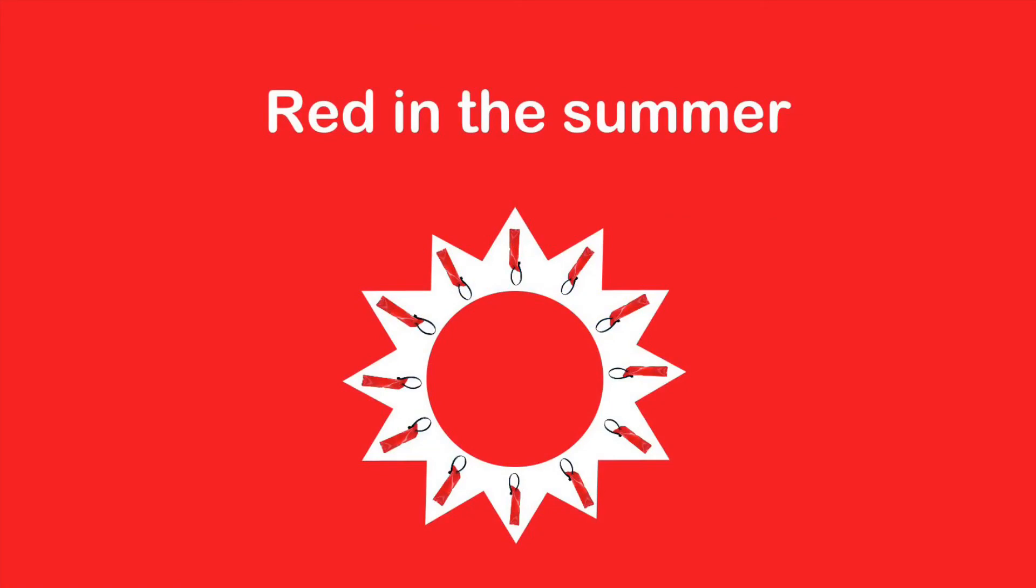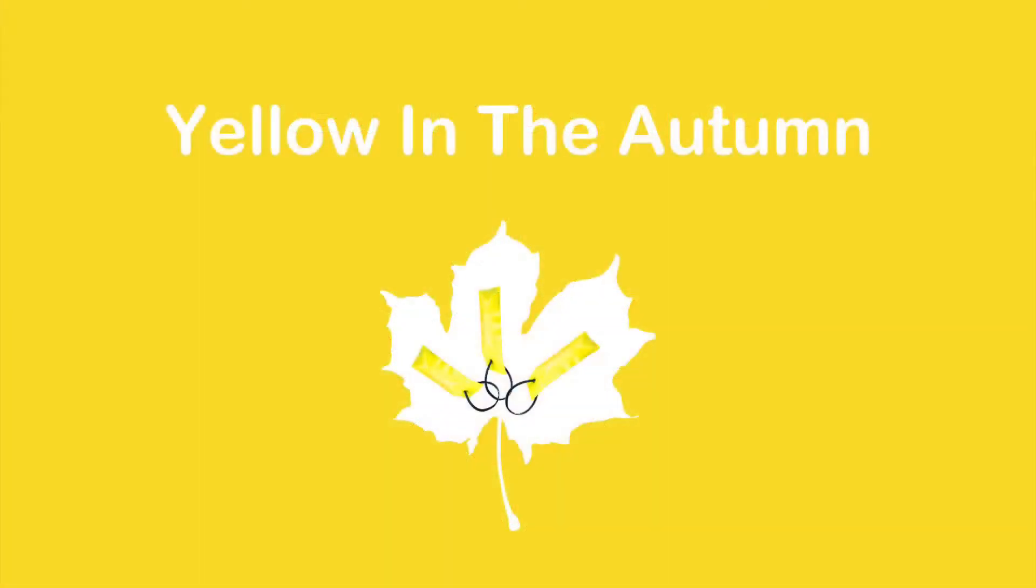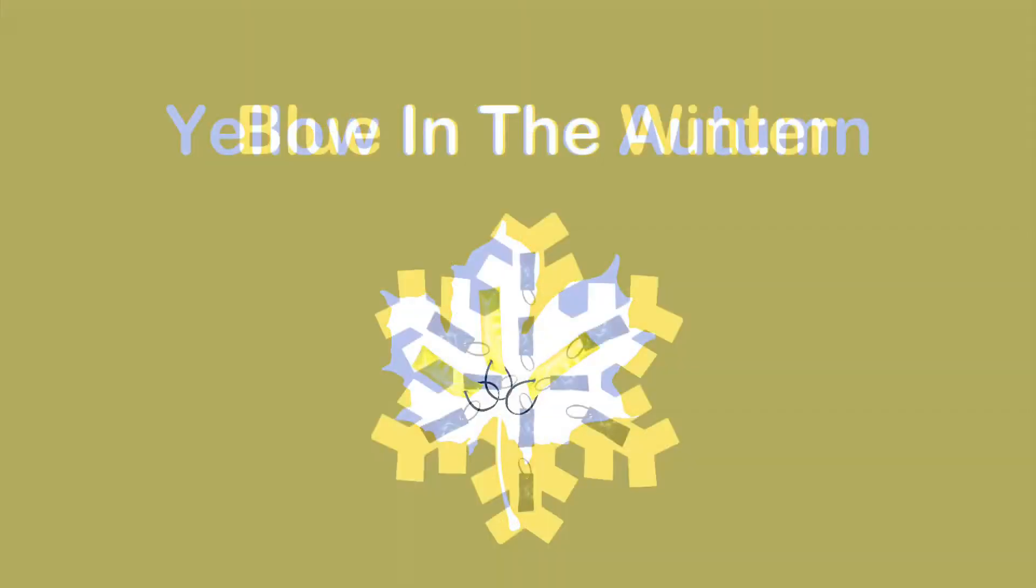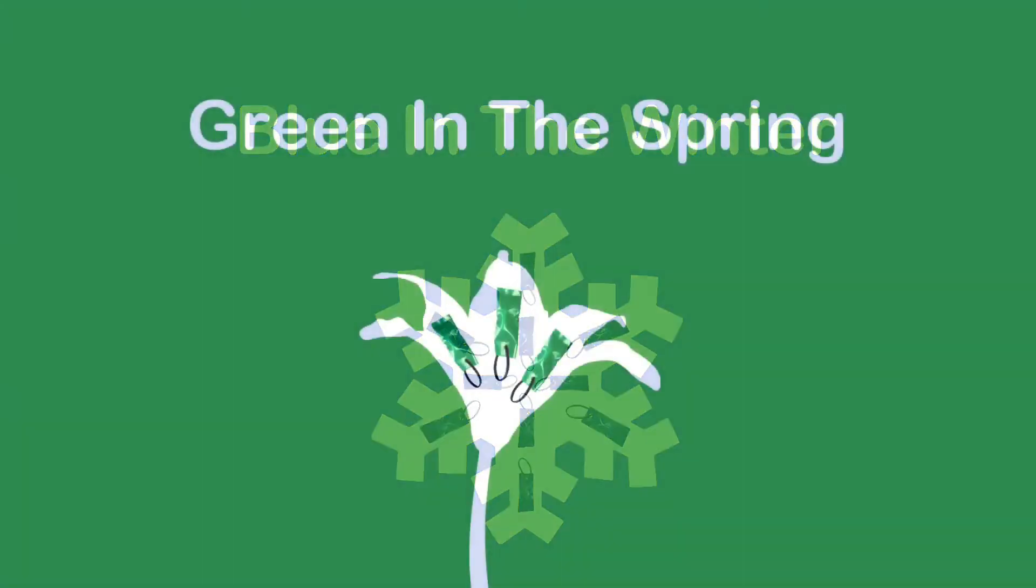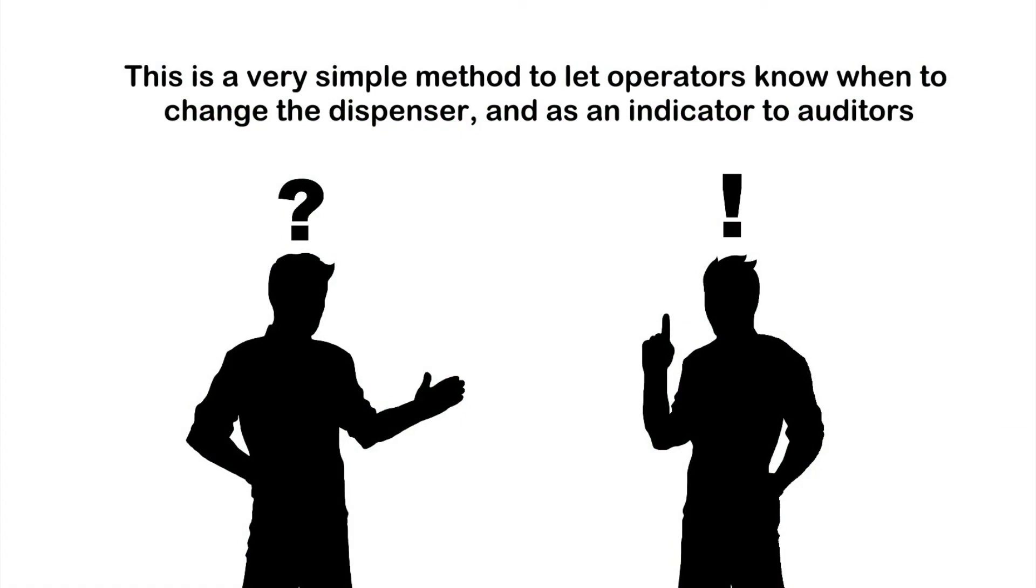Red in the summer, yellow in the autumn, blue in the winter, and green in the spring. This is a very simple method to let operators know when to change the dispenser and as an indicator to auditors.